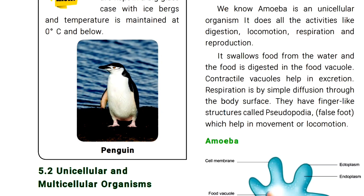A unicellular organism performs activities like digestion, locomotion, respiration, and reproduction. In Amoeba, food is digested in the food vacuole, and the contractile vacuole helps with excretion. Respiration is by simple diffusion through the body surface.